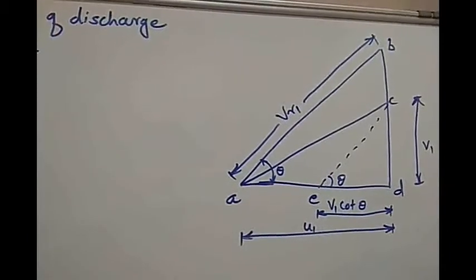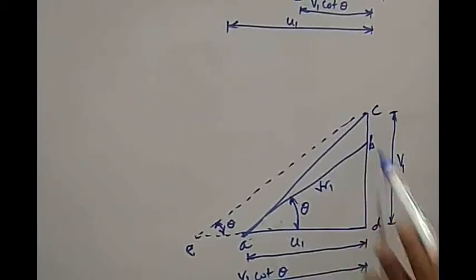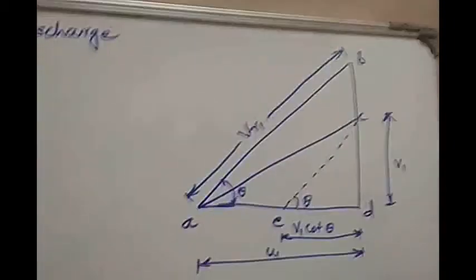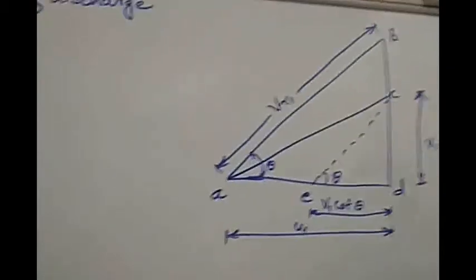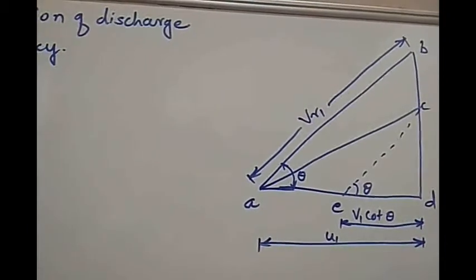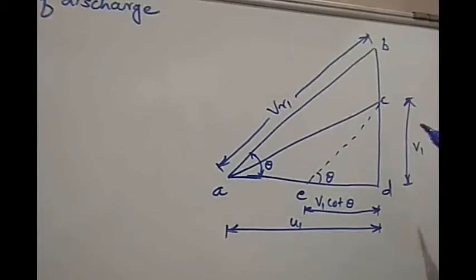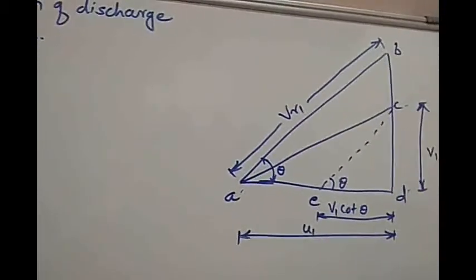Now if the flow is varied — either reduced or increased — this diagram shows the reduced flow and this one the increased flow. Initially in normal condition, the inlet velocity triangle is ABD. If the flow is increased, it changes from BD to BC. Now for the reduced flow case: when flow is reduced from BD to CD, the speed remains the same. In that case, the velocity triangle becomes ACD.